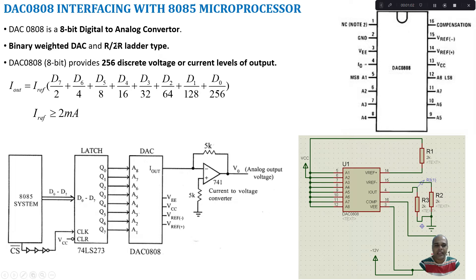Here in this 8-bit DAC, it provides 256 discrete voltage or current levels. For each binary pattern, a corresponding voltage or current will be generated, giving us 256 levels. Because it is an 8-bit DAC, 2 to the power of 8 is 256, so 256 discrete voltage or current levels of output can be produced.